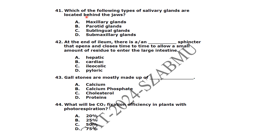Which types of salivary glands are located behind the jaws? The submaxillary glands. At the end of the ileum there is a sphincter that opens and closes from time to time to allow a small amount of residue to enter the large intestine — it is the ileocolic sphincter.